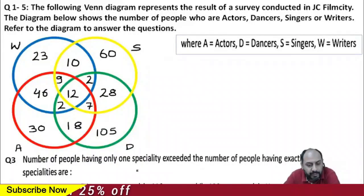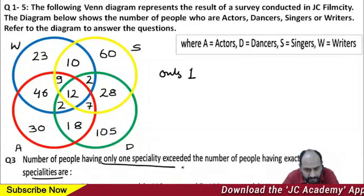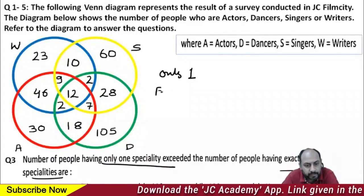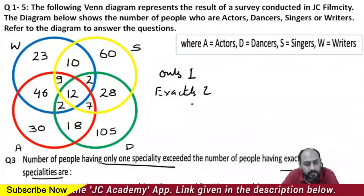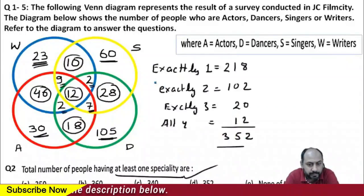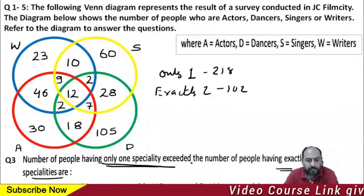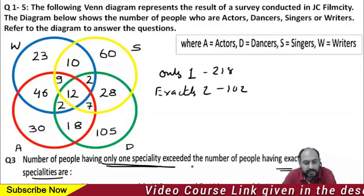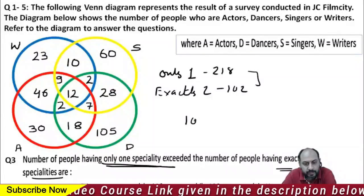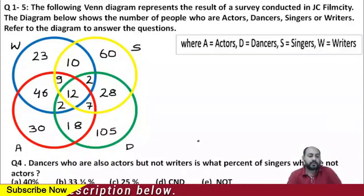Question three asks: by how much does the number of people having only one speciality exceed the number having exactly two specialities? Going back to the previous values: only one speciality is 218, and exactly two specialities is 102. The difference between them is 116, so option C is the correct answer.